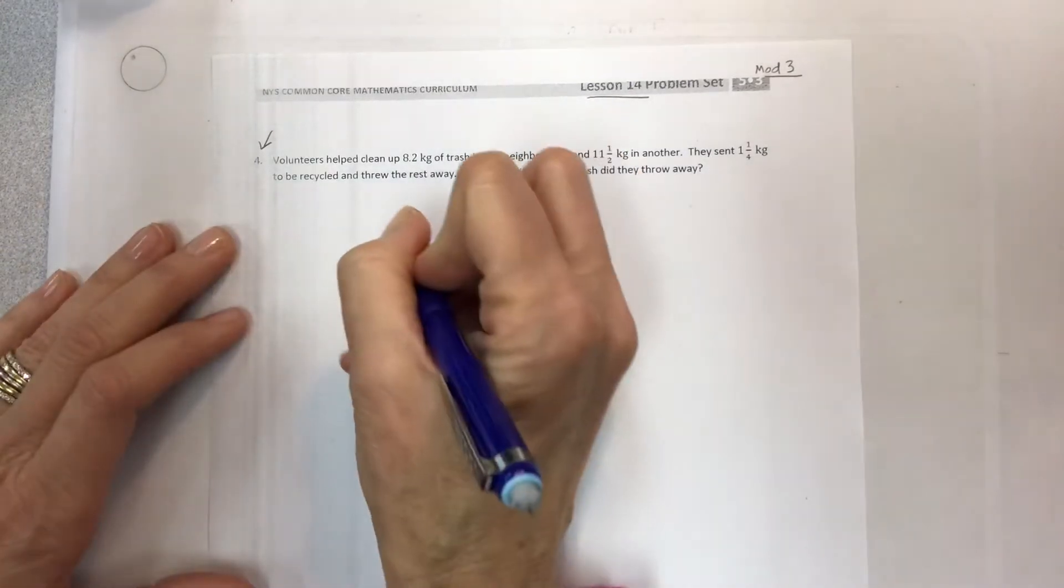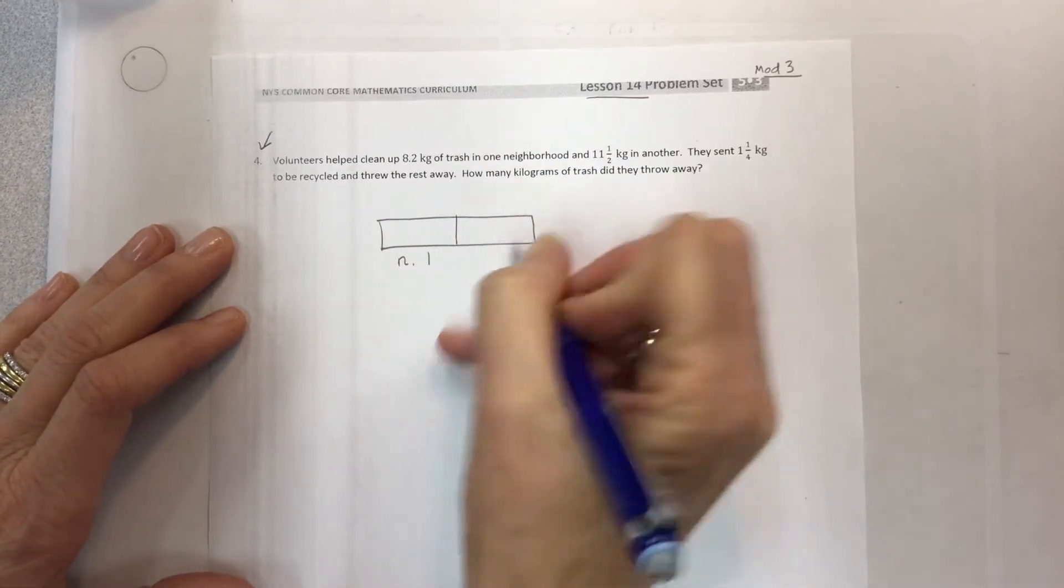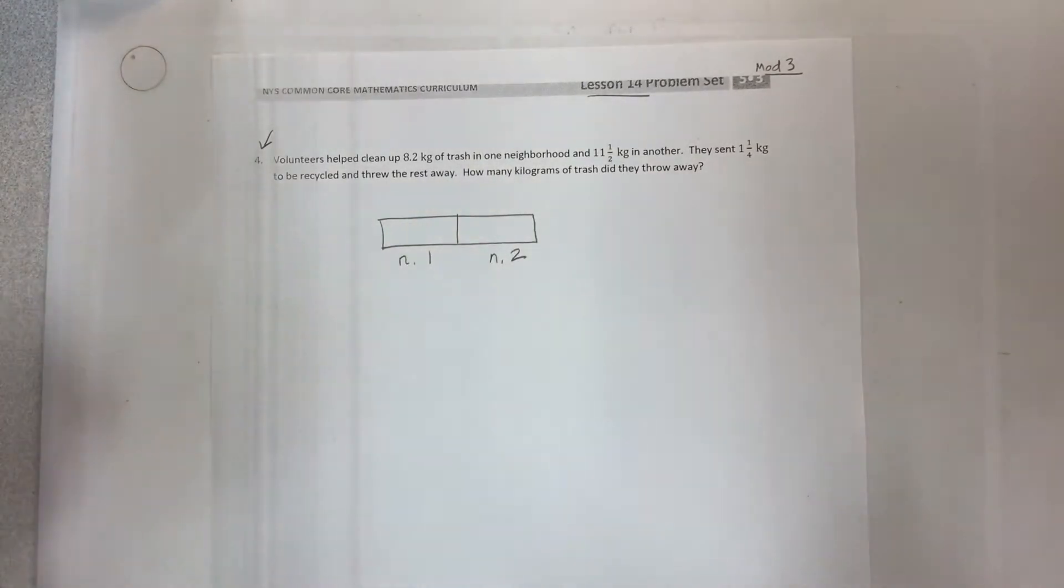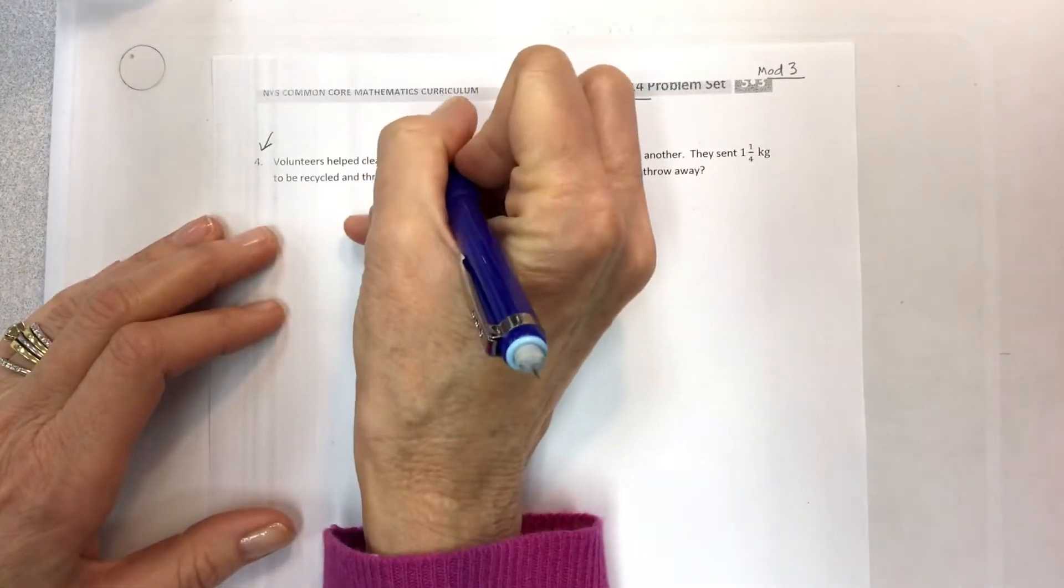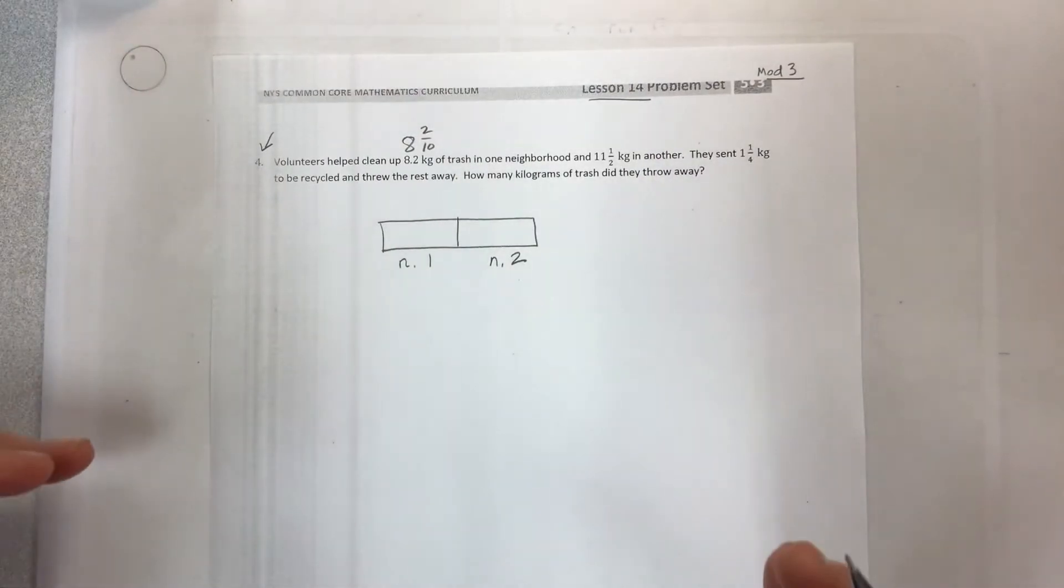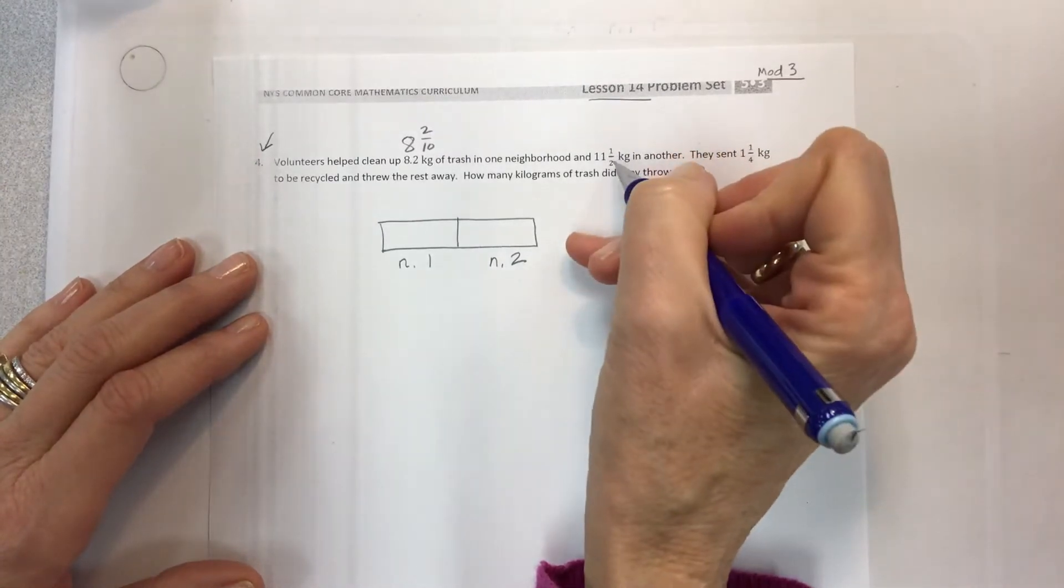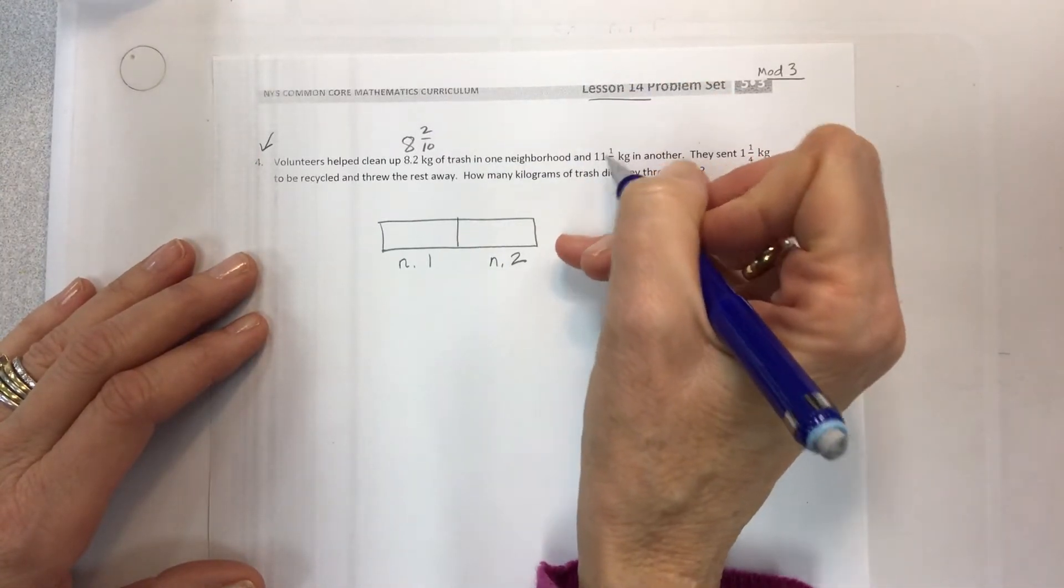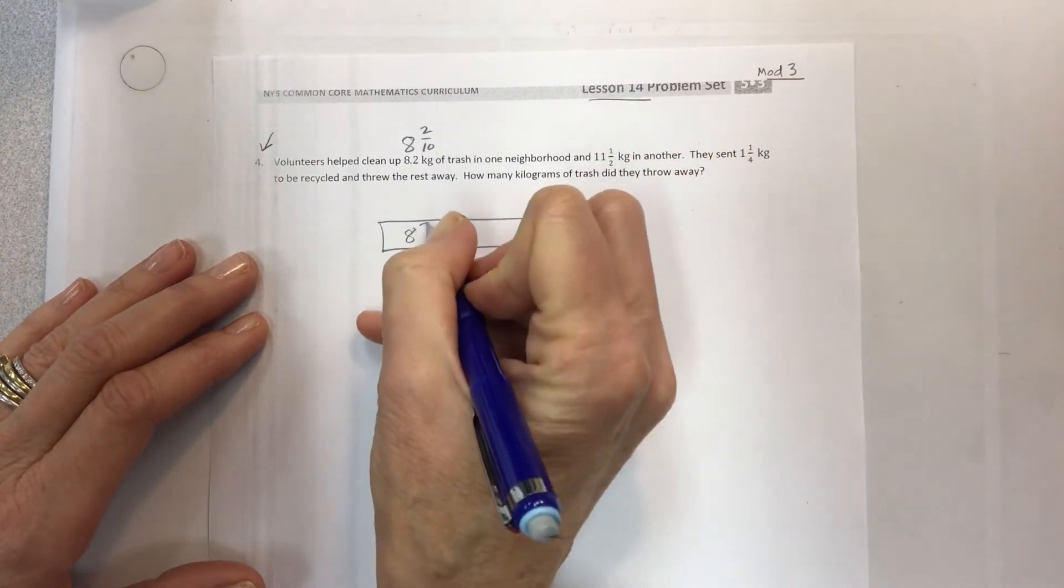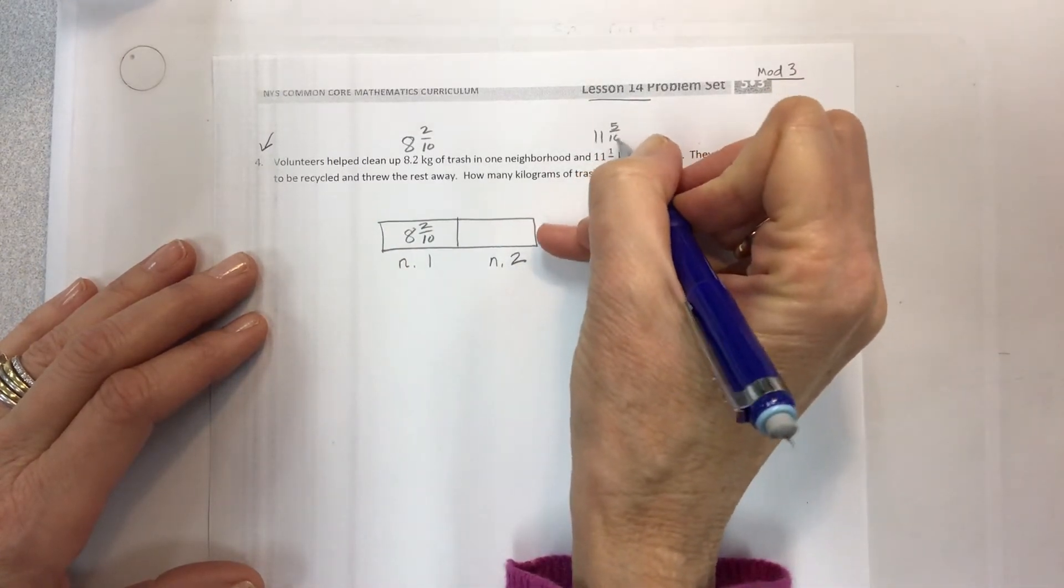So for this we've got a couple of different neighborhoods, N1 and N2, neighborhood 1 and 2. We have 8 and 2 tenths. Let's just take all of these decimal numbers and weird things and make them compatible. If I have 11 and a half, I would like that to also be tenths. So take your 11 and a half and instead of putting 11 and a half, I know I need tenths, so I'm going to make it 11 and 5 tenths right away.